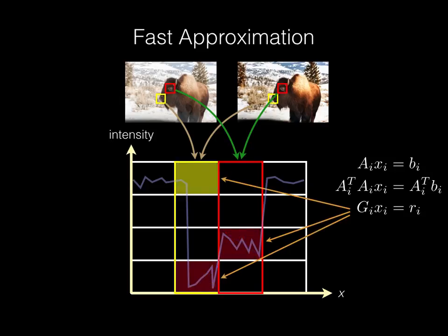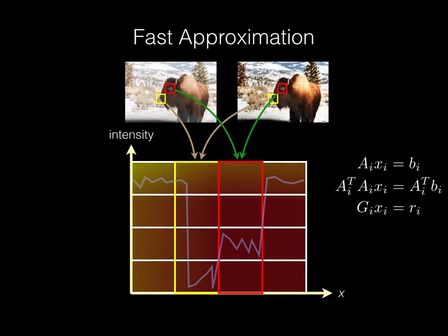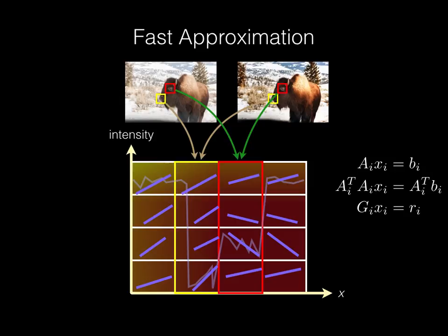We show in the paper that because everything is linear, storing G and r within each grid cell, blurring the resulting vector-valued grid, and then independently solving the smallest linear system in each cell is equivalent to solving a set of weighted least squares problems where the weights depend on spatial and intensity distance to the data. This version of the problem is easy to parallelize and much faster than global optimization.